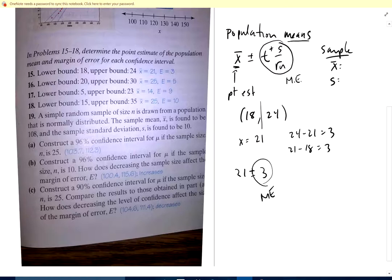Where this interval comes from is 21 plus or minus 3. That's the margin of error, that's this part of the equation right there. So x bar is 21 and my margin of error is 3, what I'm adding and subtracting to go each way. There's 15.